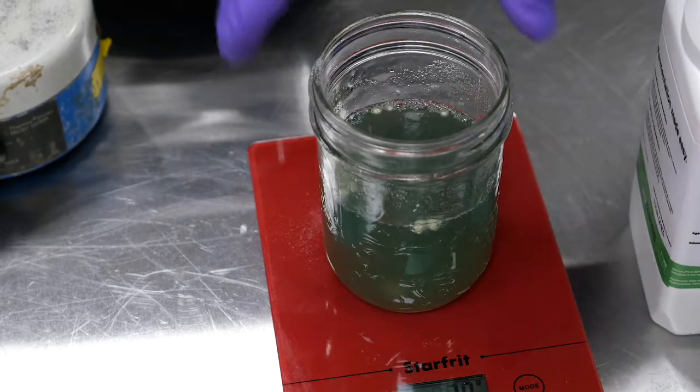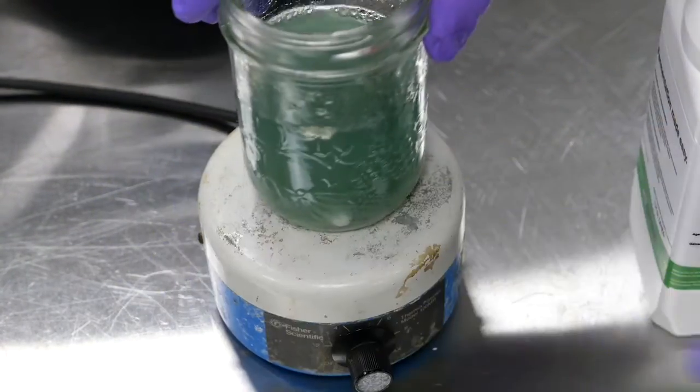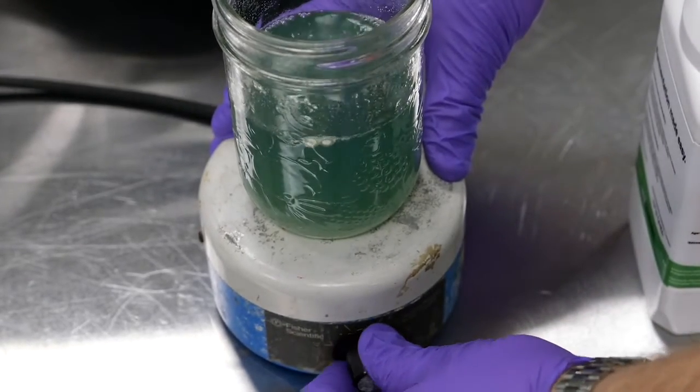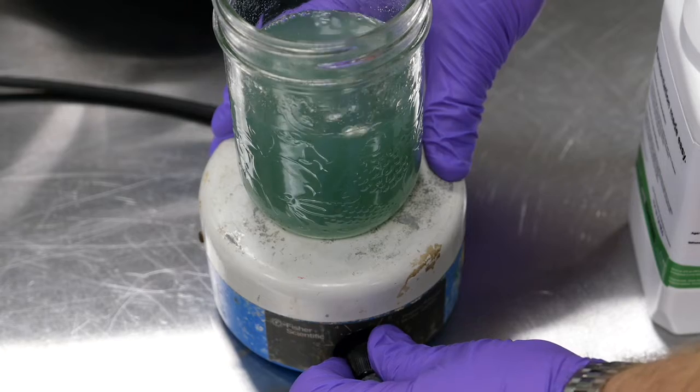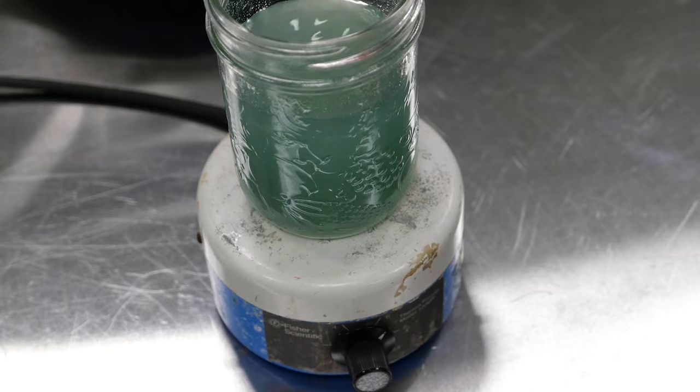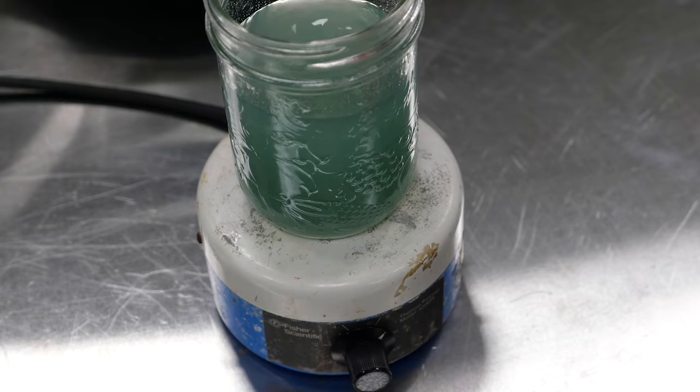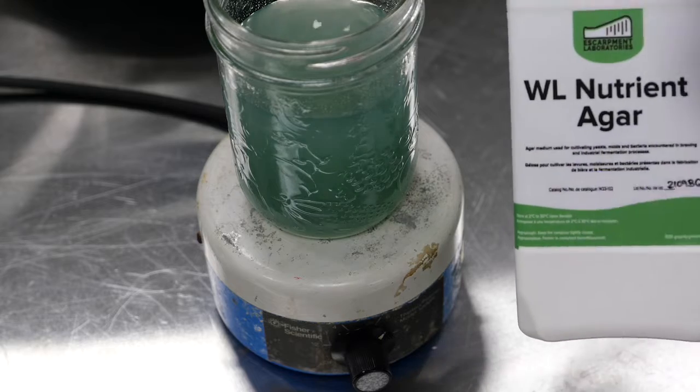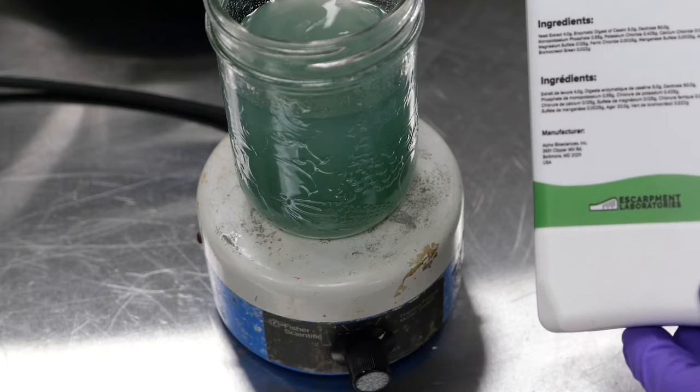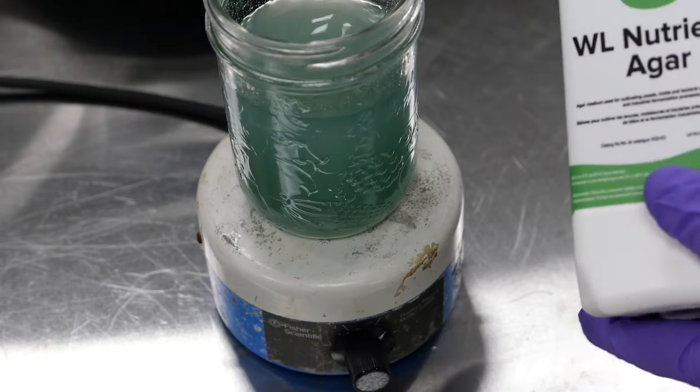So the next thing we're going to do is put it on that stir plate and stir it up. We want to see that fully dissolve before we start to sterilize it. Now these products are pre-mixed, so you already have agar in here. You already have all of the ingredients you need to make these common brewing industry quality control media. You don't need to add anything else.